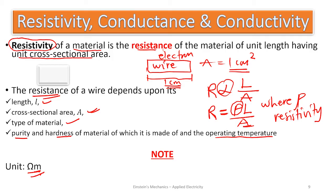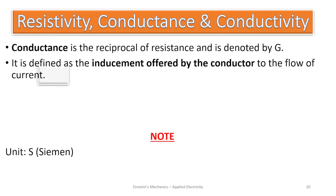The unit for resistivity is ohm-meter. Every material has its own resistivity, and the measure of this resistance is what we call the resistivity of the material — it will be different from one material to another.